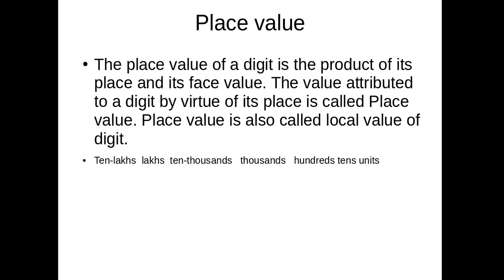Now see: 10 lakhs, lakhs, ten thousand, thousand, hundred, tens and units — these are your places. The digits 1, 4, 2, 3, 5, 6, 1 are placed in different positions: in the unit place there is 1, in the 10s place there is 6, in the 100s place there is 5, in the 1,000s place there is 3, in the 10,000s place there is 2, in the lakh place it is 4, and in the 10 lakh place it is 1.